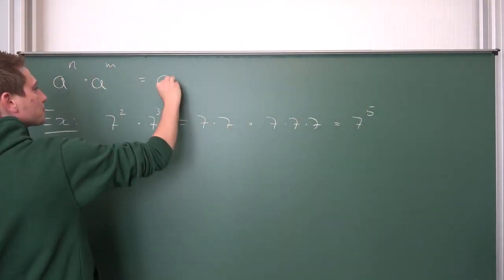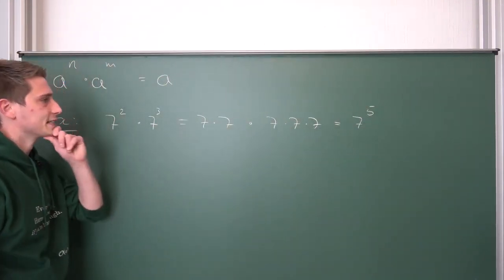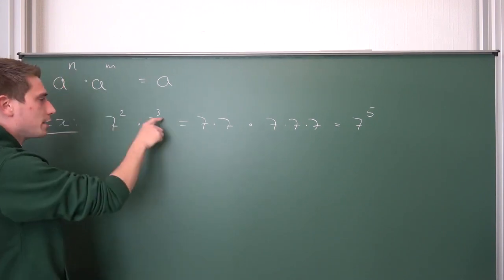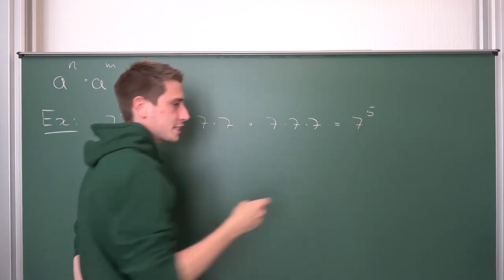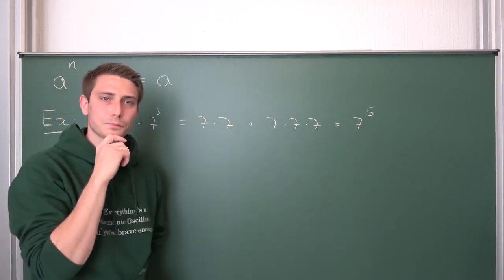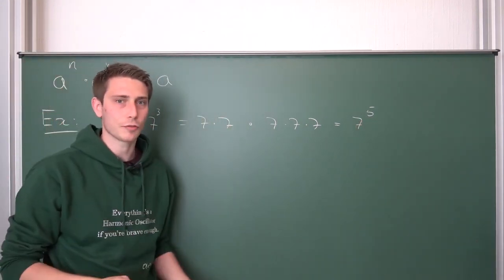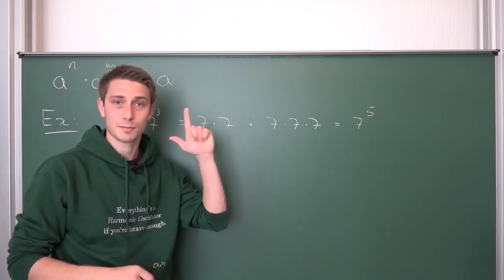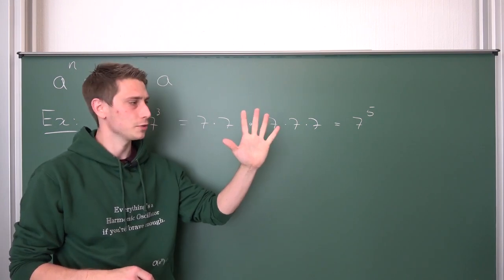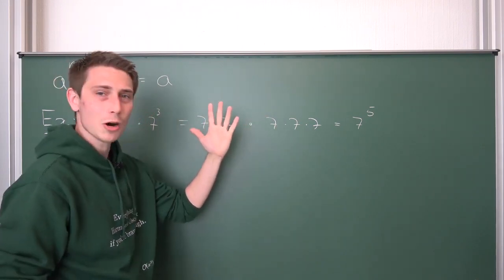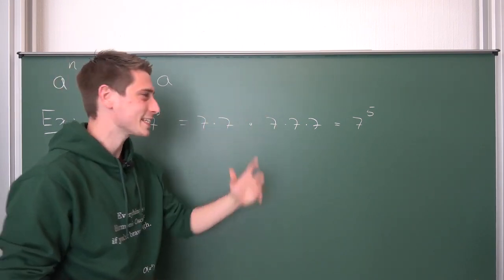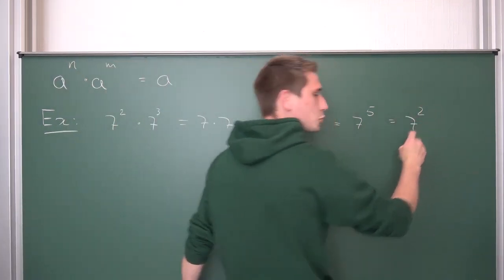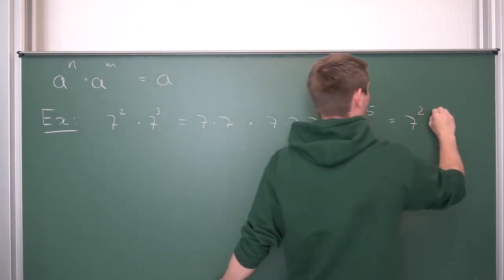So let us gather this. We have the base a — keeping this abstract. But now 2 and 3 turned into 5 in some way. How are 2, 3, and 5 connected? Well, if I give you 2 apples and place 3 apples next to it, you get 5 apples. What a coincidence — works out! So this is nothing but 7 to the 2 plus 3rd power.